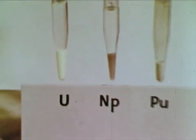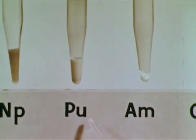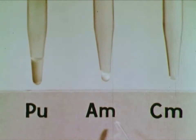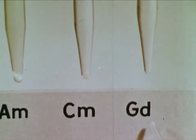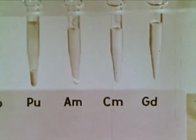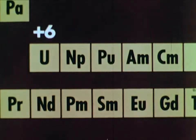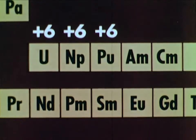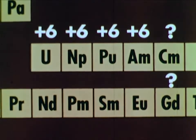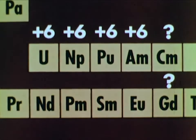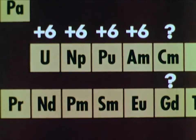Here are the results, half an hour later. Precipitates are present in uranium, neptunium, plutonium, and americium, indicating the presence of plus-six ions. But no precipitates appear in the curium or gadolinium solutions. Apparently, they cannot be oxidized to the plus-six state. Our tests show that uranium, neptunium, plutonium, and americium all oxidize to a plus-six state. But curium and gadolinium do not form a plus-six ion. Perhaps they were oxidized to a plus-five or plus-four state, or perhaps neither of them was oxidized beyond the plus-three state in which it started.